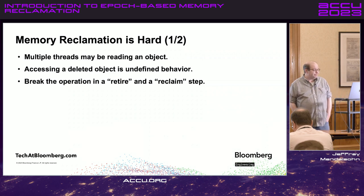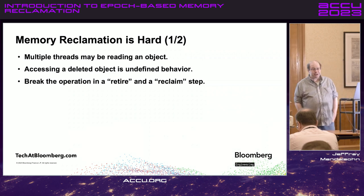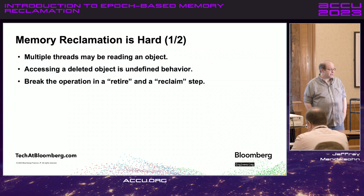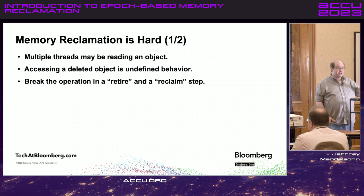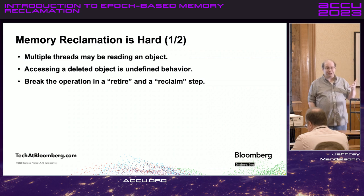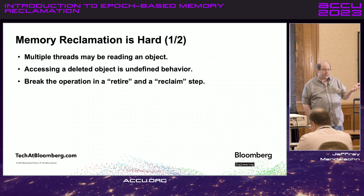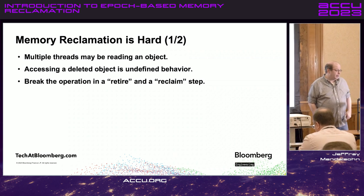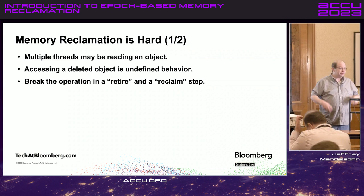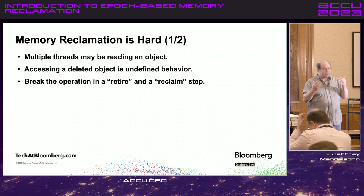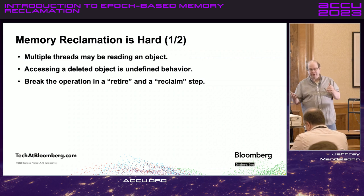Memory reclamation is hard. Multiple threads can be reading an object, and I don't know when it's safe to delete it. If I delete an object when it's not safe and another thread tries to access that memory, that's undefined behavior — and presumably that's bad. So what we're going to do is break the deletion step into two steps: retiring and reclaiming.